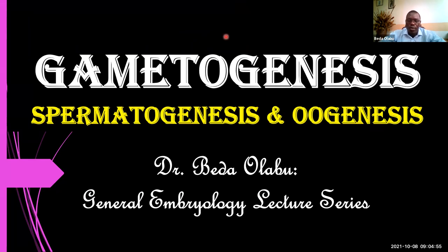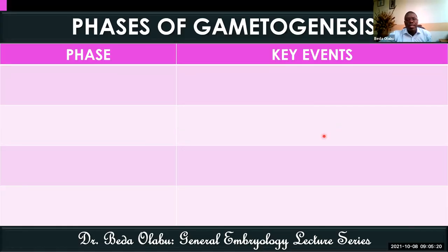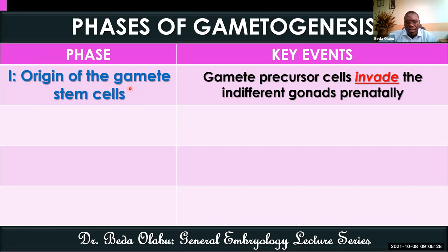This morning we continue with our lecture on gametogenesis. We started gametogenesis and covered spermatogenesis, so today we'll pick up from oogenesis. To remind you, gametogenesis takes place in four key phases. The first phase is where gamete stem cells originate from extra-gonadal cells and invade the indifferent gonad prenatally, becoming the stem cells for the gametes — either oogonia or spermatogonia.